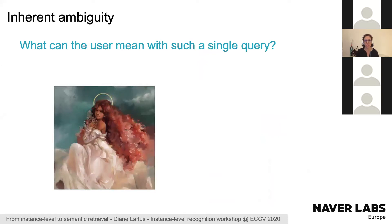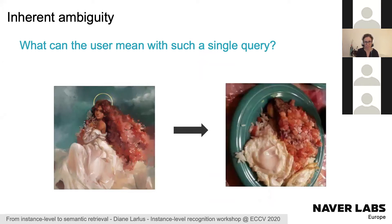But if you query with a single image, there's an inherent ambiguity. If you query with a particular painting, you're probably looking for similar paintings or other paintings by the same artist — not something that is visually very similar but semantically unrelated.